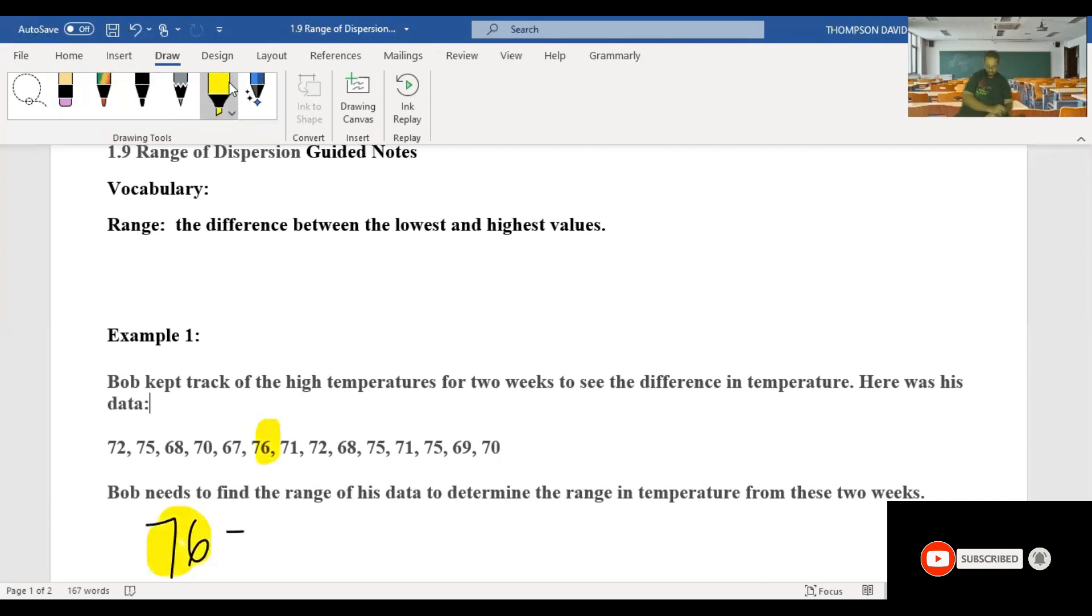And then we subtract the smallest number, which we'll highlight that in green. It appears like the smallest number is 68. And we subtract them. 76 minus 68. And 76 minus 68 gives me eight.